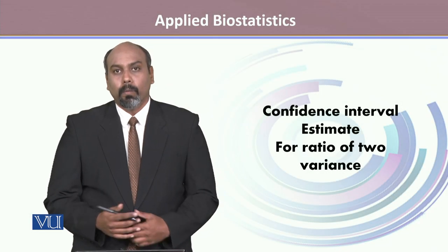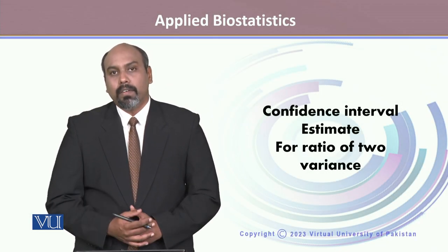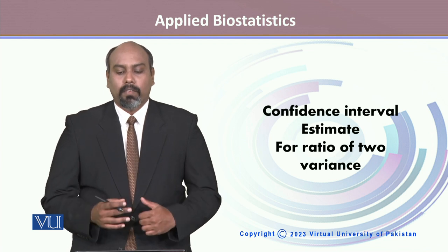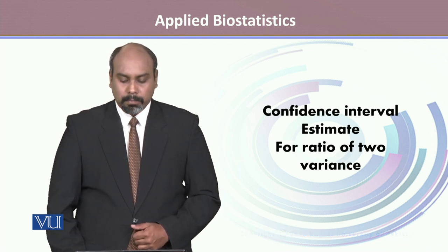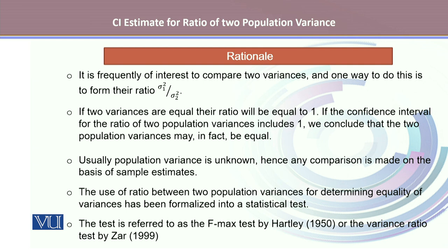In this module we will talk about the confidence interval estimate for ratio of two variances. It is frequently of interest to compare two variances, and one way to do this is to form the ratio sigma 1 square divided by sigma 2 square, where sigma 1 square is the variance from the first population and sigma 2 square is the variance from the second population.